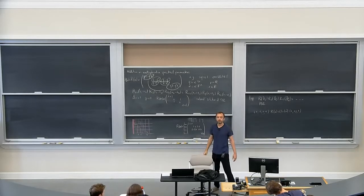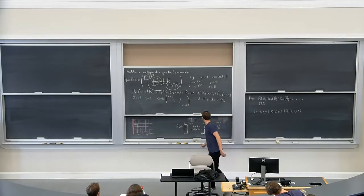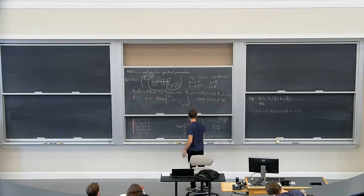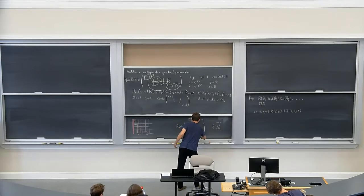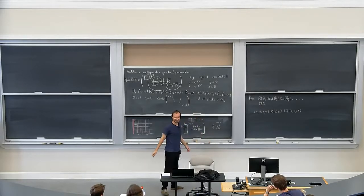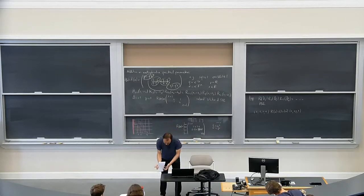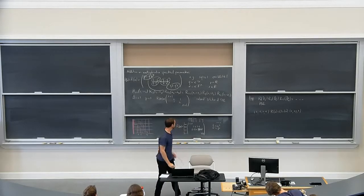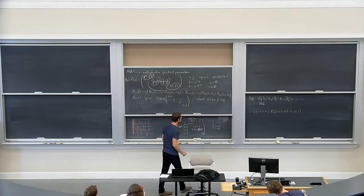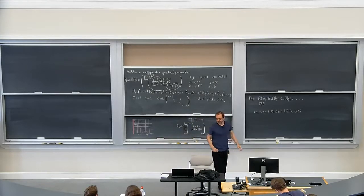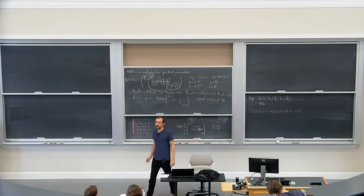Actually, the correct factor is T(1 minus X) — sorry, I screwed up. Let me try again: T(1 minus X). Yes, thank you. All good now. So this is for a little bit later. Now we'll get back on track.